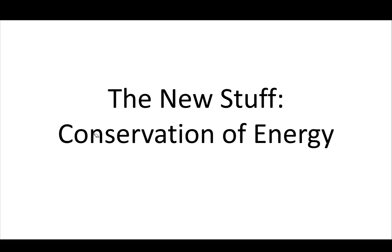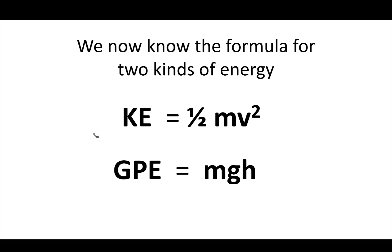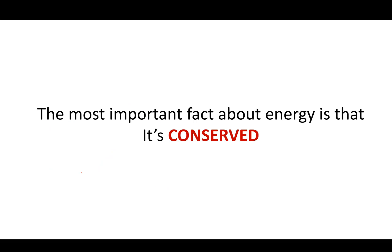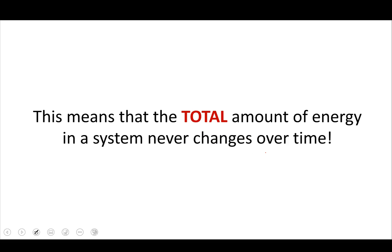Now we're on to the new stuff: the conservation of energy. We know the formula for two different kinds of energy — kinetic and gravitational — which are the energy of motion and the energy of your position in a gravitational field. The most important fact about energy is that it is conserved, meaning the total amount of energy in a system never changes over time. A system is just a set of things that you care about.